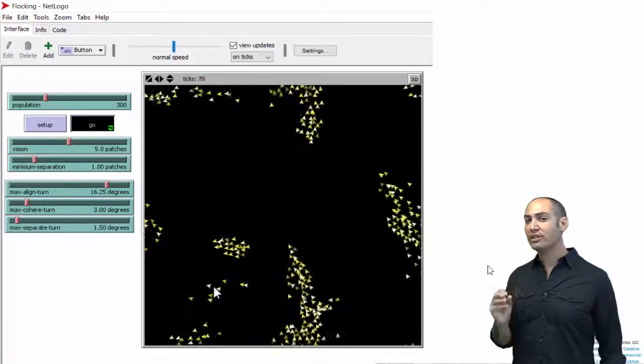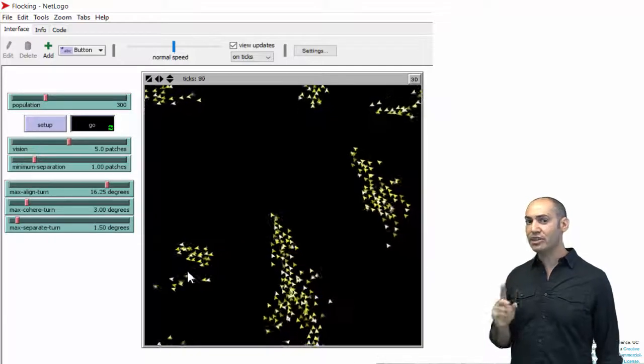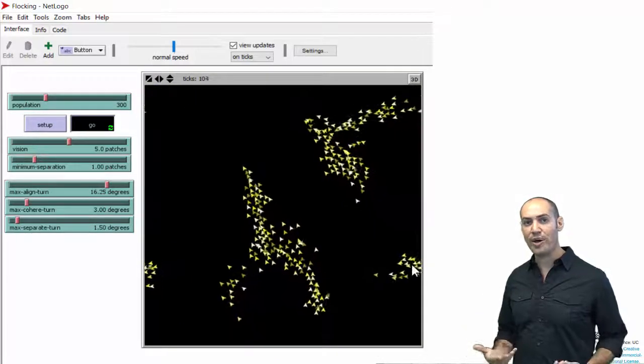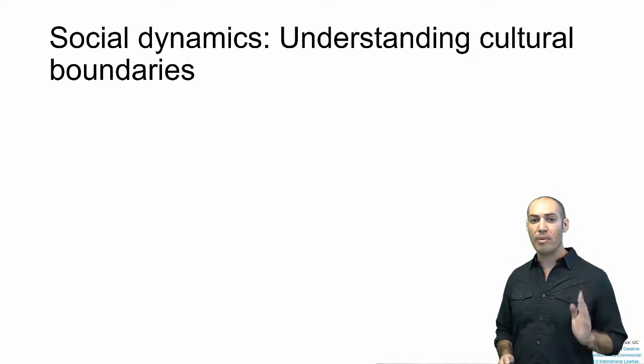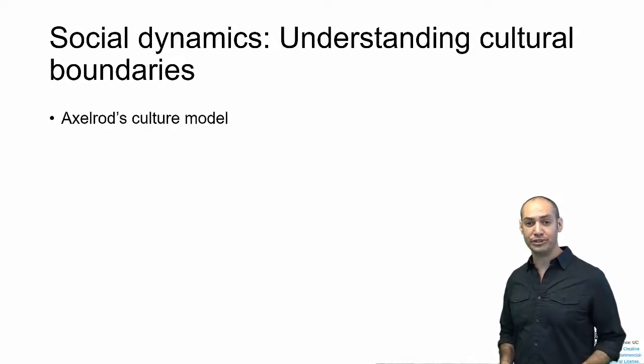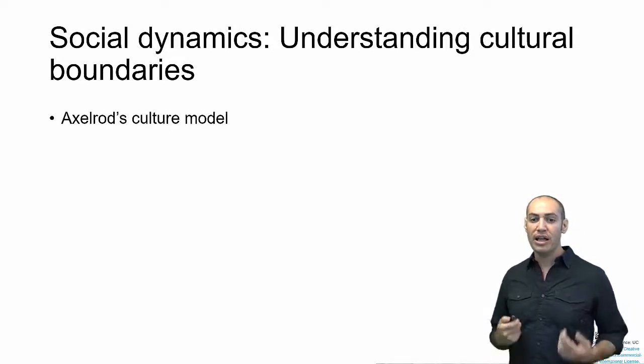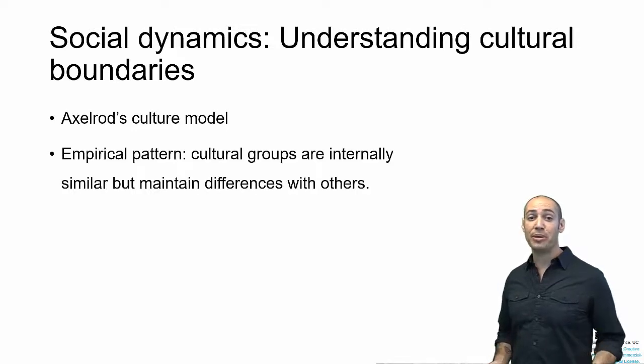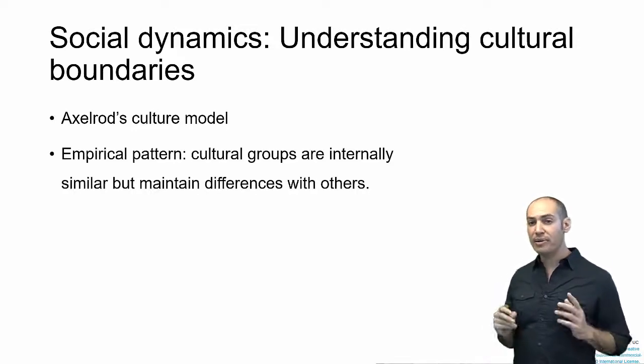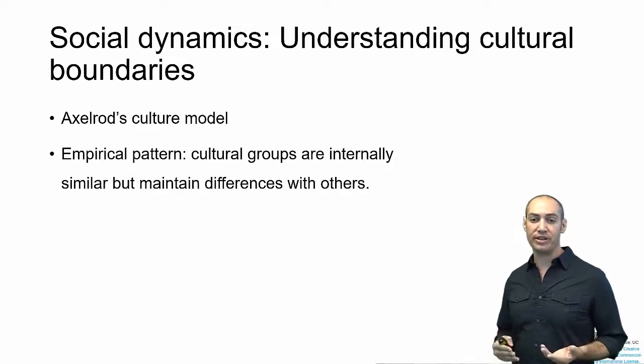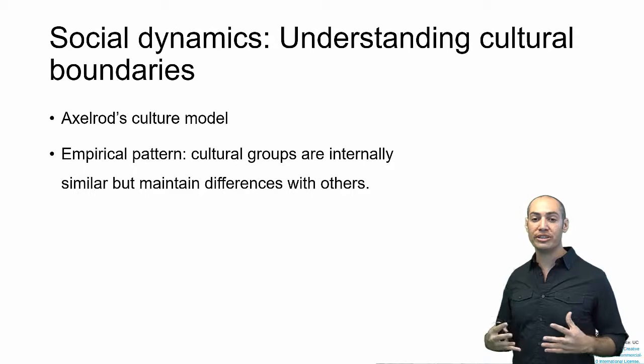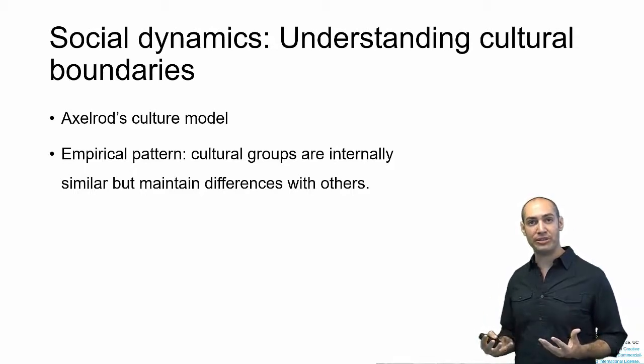I want to go over, in a little bit more detail, a single example model from the social sciences to think about how agent-based models are used to understand something. I'm just going to briefly introduce a model by Robert Axelrod on the diffusion of culture. This is Axelrod's culture model. This was published in the late 1990s.